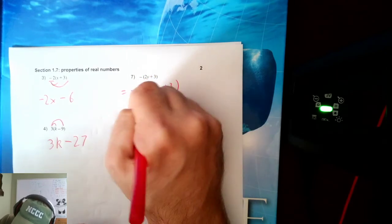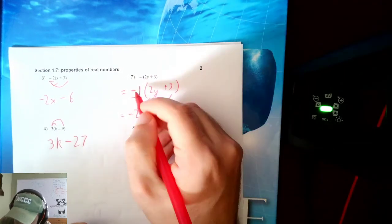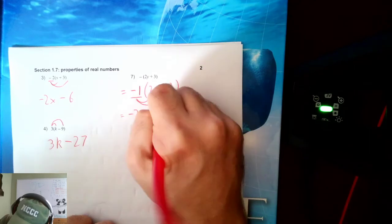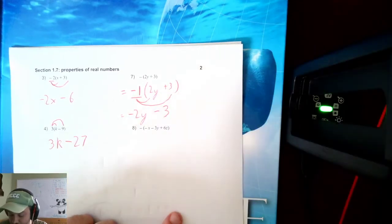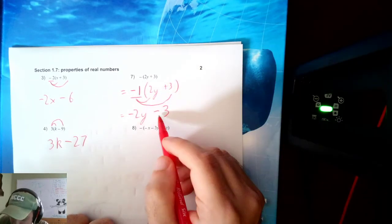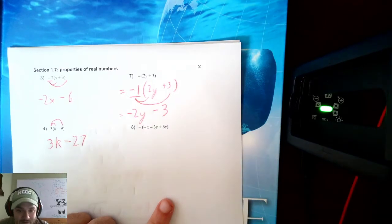So I want to distribute negative 1 through. Negative 1 times 2 is negative 2Y. Negative 1 and plus 3 will make a minus 3. Remember, different signs will lead to a negative value.